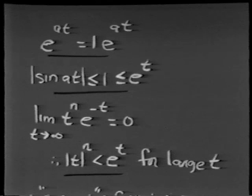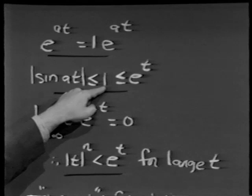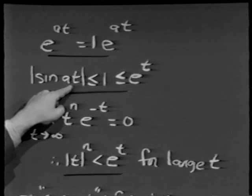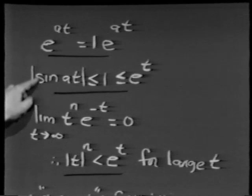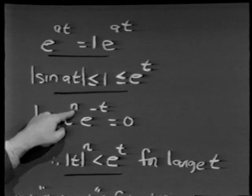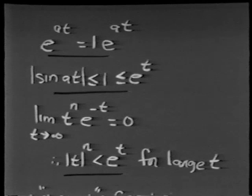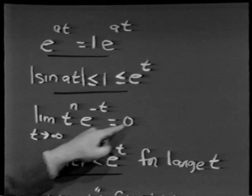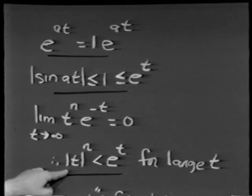The sine of at has exponential order because the magnitude of sine at is no greater than 1, and 1 is no greater than e to the t for any positive t, since e to the 0 is already 1. So sine at is less than 1 times e to the 1t for t greater than 0. Similarly, polynomials t to the n have exponential order. Using L'Hôpital's rule or power series, we showed that for any fixed positive integer n, t to the n times e to the minus t goes to 0 as t goes to infinity, so the magnitude of t to the n is less than e to the t for large t.